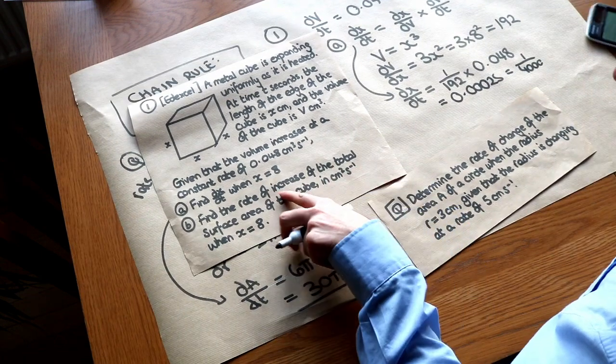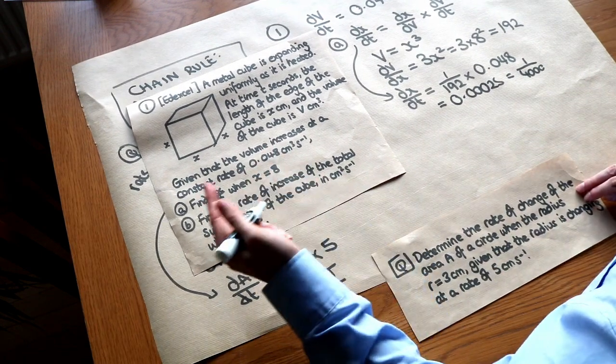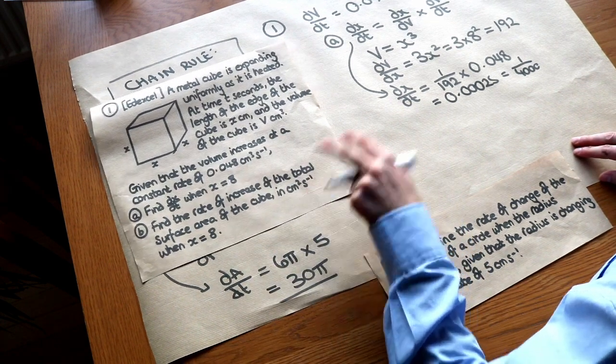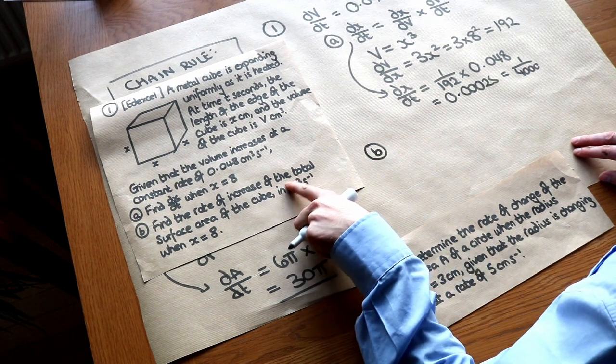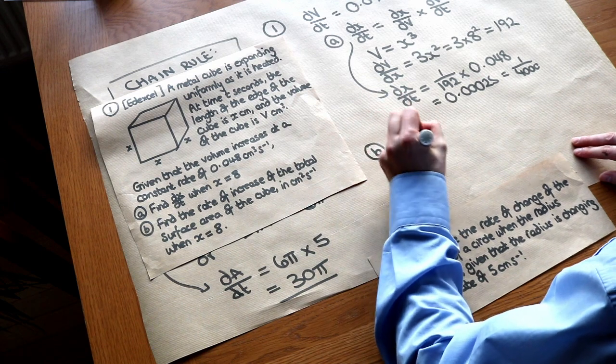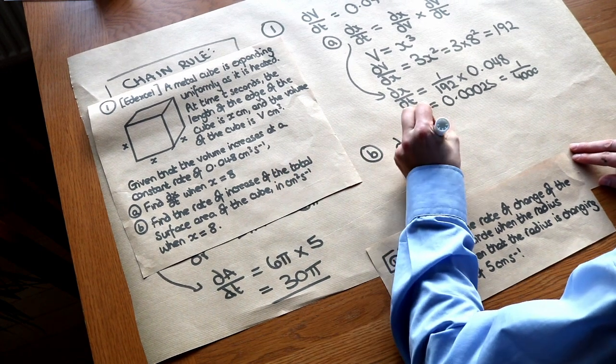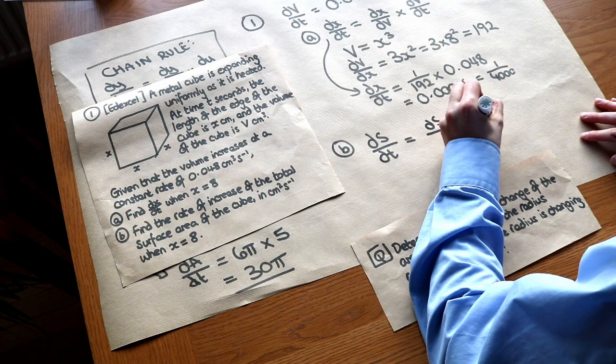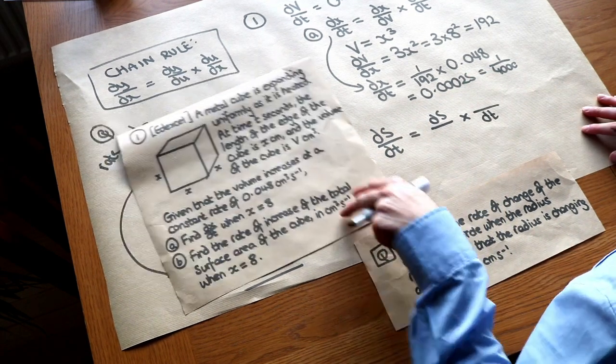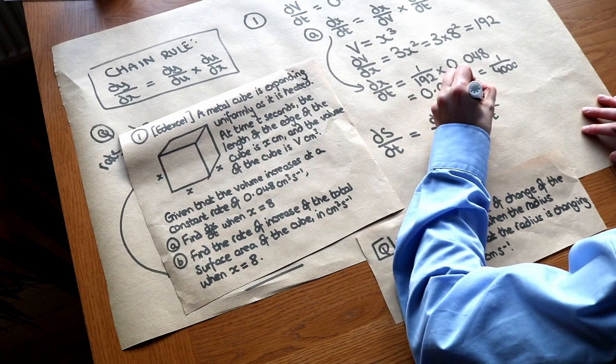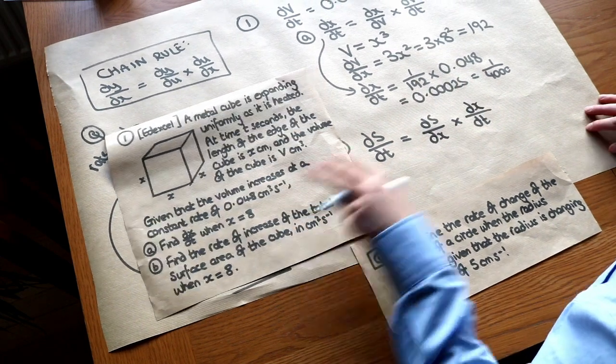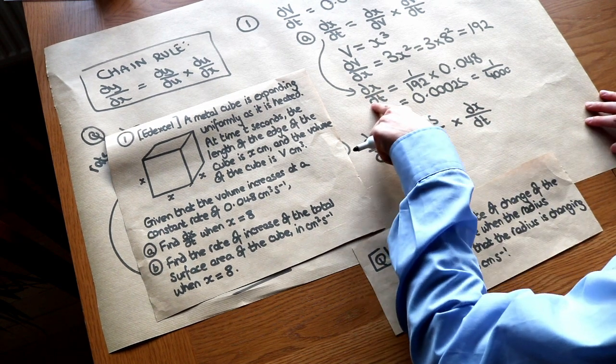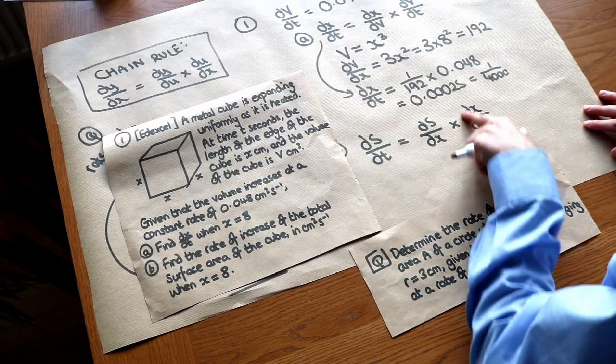This second part: find the rate of increase of the total surface area, let's call that s, of the cube when x is 8. It's the same value of x because otherwise we wouldn't be able to use our previous answer. So find the rate of change of the surface area. If the surface area is s, it's ds over, it's a rate, so it's over dt. We can use the chain rule again, two blank fractions, put the ds here, dt here. What's the only other variable involved here? We've got x within the cube, so let's put the dx there. As before, one of these values is always given. We have worked out dx over dt. Look, dx over dt is 1 over 4,000, so that's known.